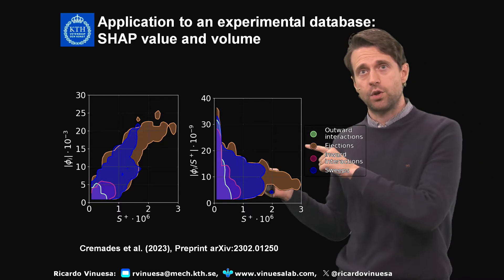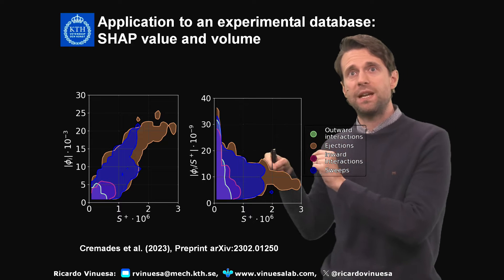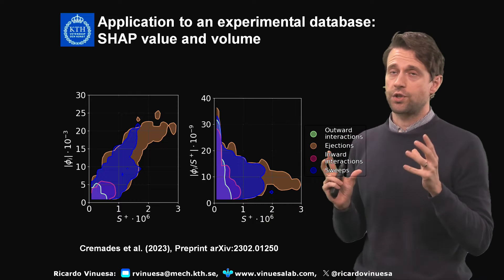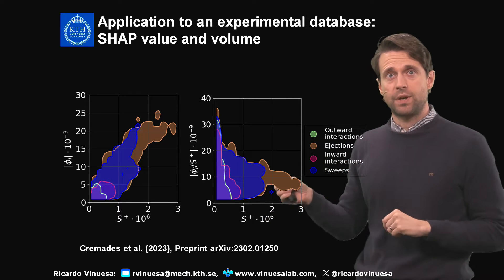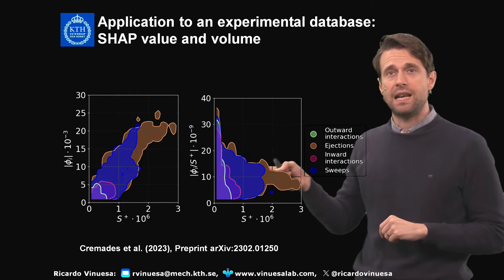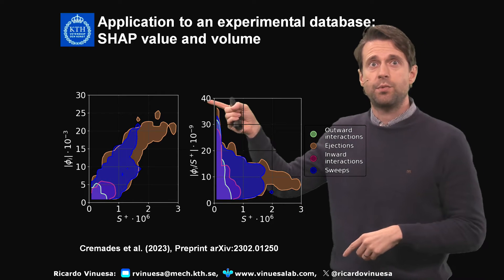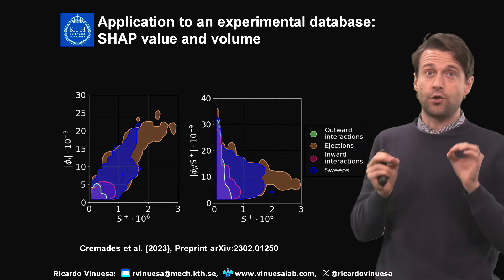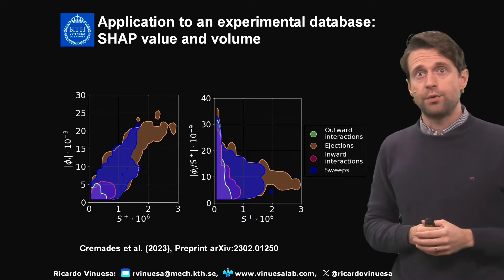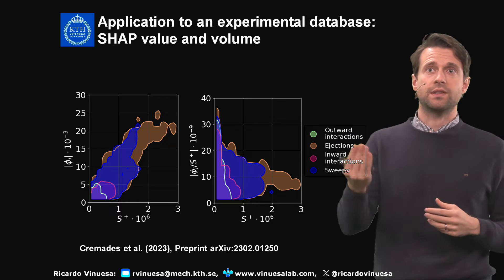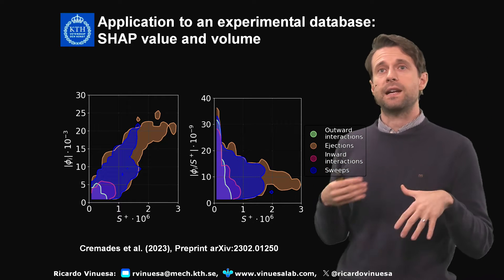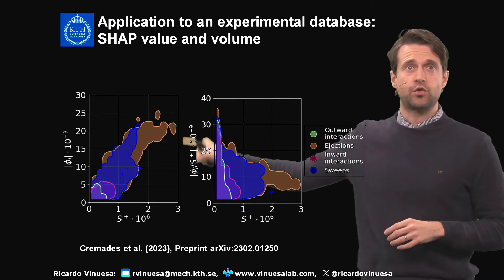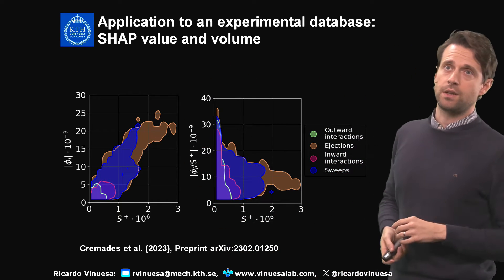In the next panel, we show the SHAP value per unit of surface as a function of the surface of the structures. These results are again in agreement with the DNS: the largest structures are not the most important per unit surface. The most important per unit surface are medium-sized ejections, mostly, with some sweeps and some inward interactions. The relative importance of the sweeps is magnified due to the higher Reynolds number, but overall the trends are in very good agreement with the DNS.